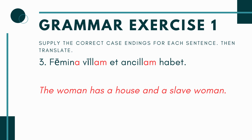Number three: femina blank, villa blank, and ancilla blank, habet. Everything's missing here, so when you don't have any endings on your nouns, you really need to think. My verb is habet — it's singular — so I'm looking for a singular subject ending in A. I have the word for woman (femina), house (villa), and slave woman (ancilla). If I make femina my subject — famina — I'd be saying the woman has something: a house and a slave woman. That makes sense. You're going to say famina, villam et ancillam habet.